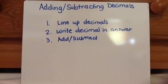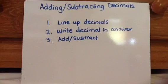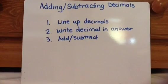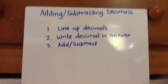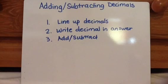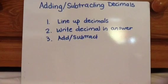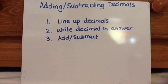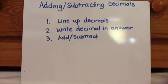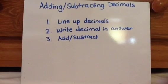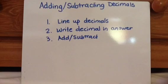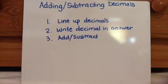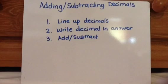So here are the three steps to adding and subtracting decimals. The first step is to line up your decimals. So like if they're asking you to add 1.3 plus 2.6, you would line them up on top of each other. The second step is go ahead and write the decimal in your answer where it's going to be. And then the third step is to just add and subtract like it's whole numbers. So let's go over some examples.